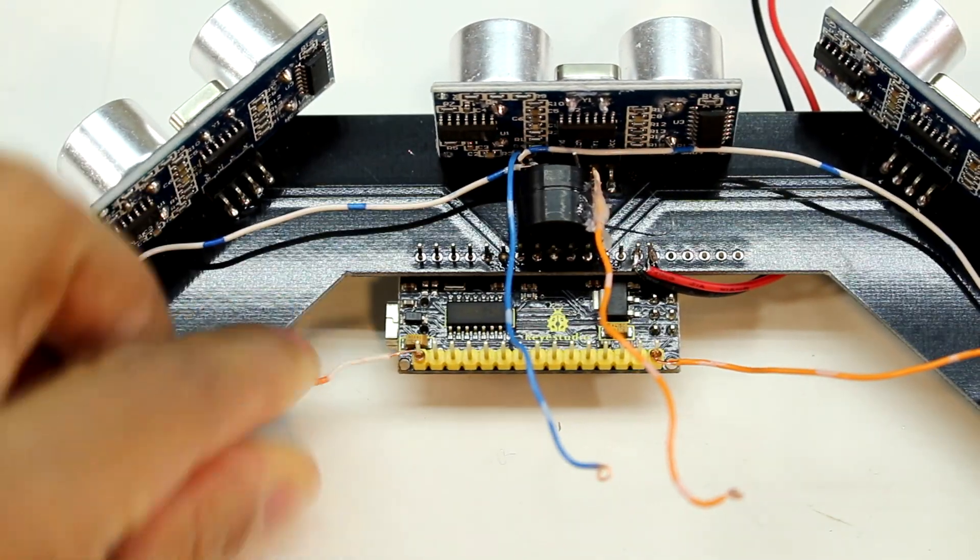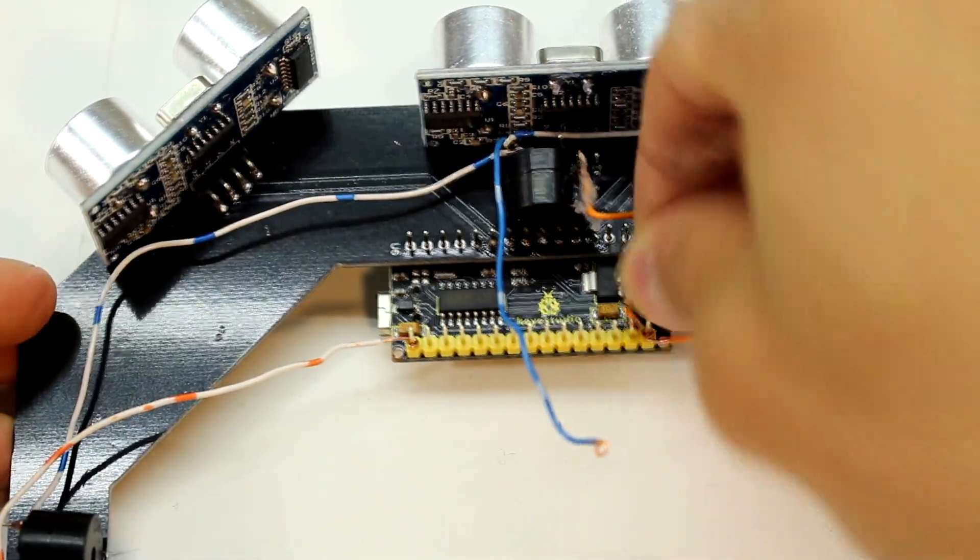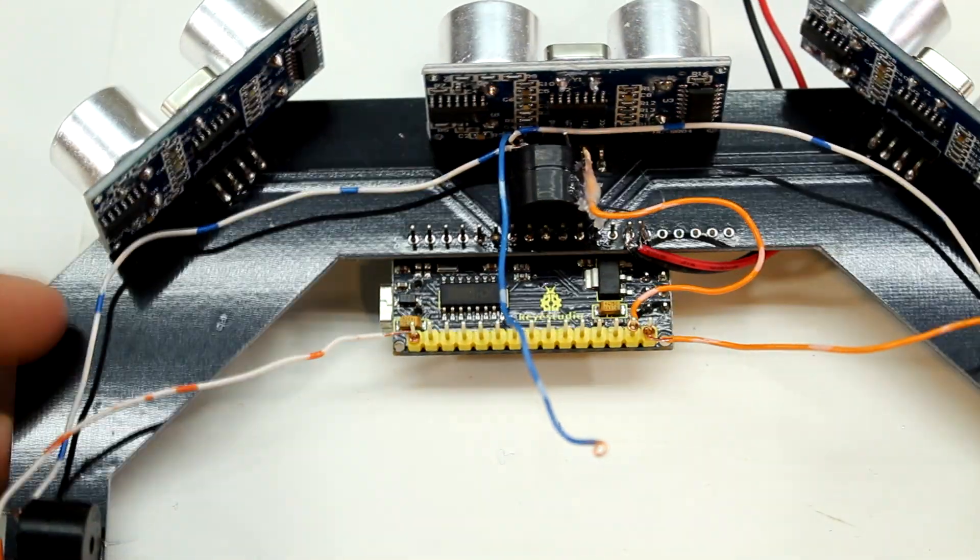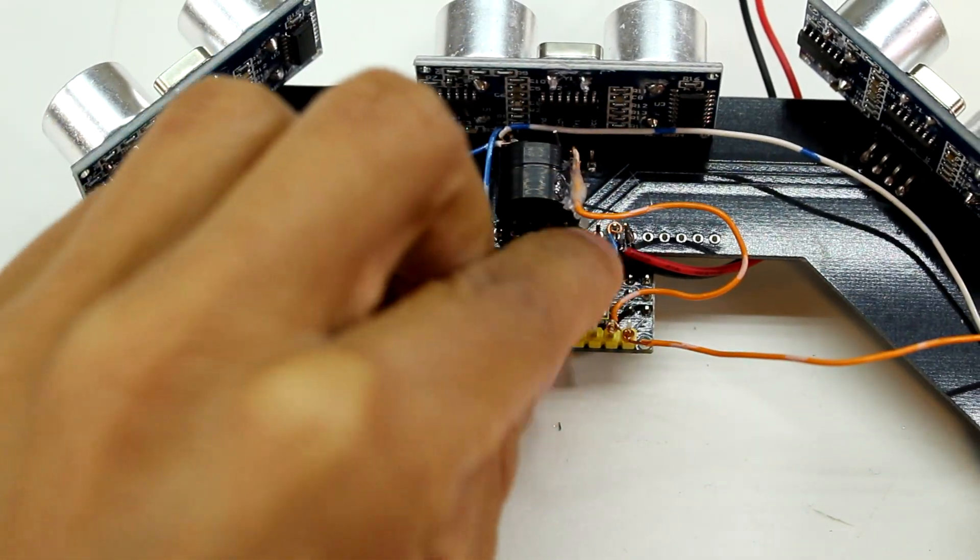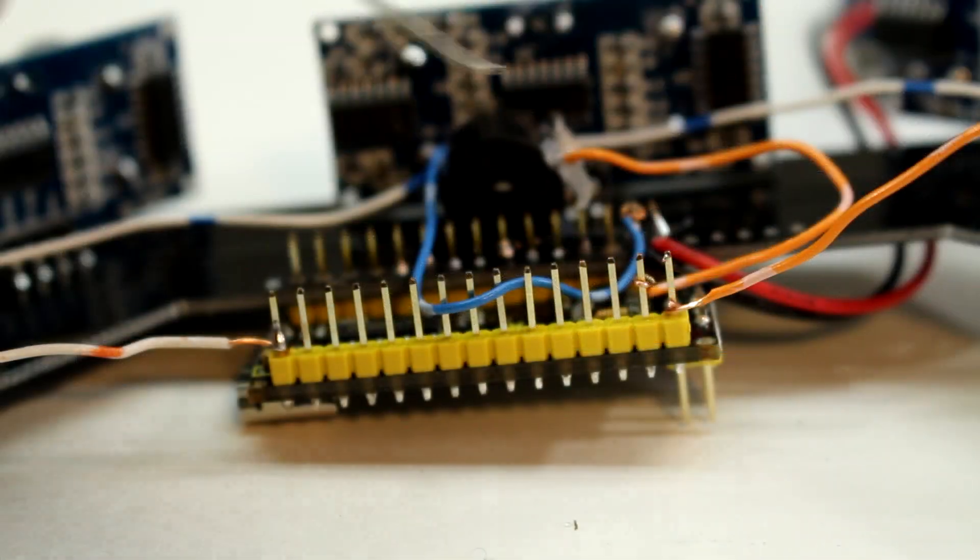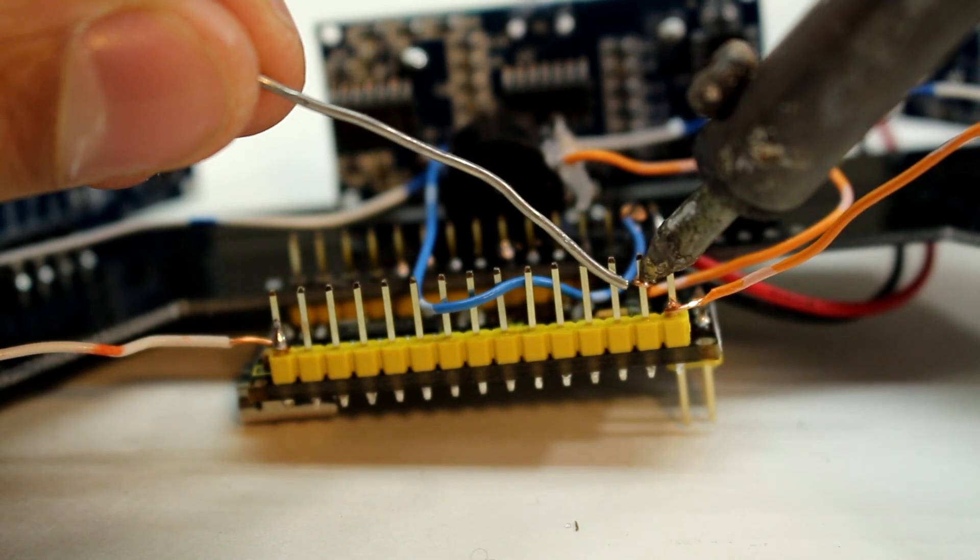Now we can attach the ground and the positive wires for each buzzer. This might be a bit hard to follow so in the description below I'll post a link to where you can find a circuit diagram of all this. And then all we have to do is solder these into place.